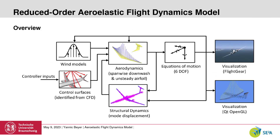The most important component of the model is the aerodynamics model, which is coupled with a structural dynamics model and the equations of motion. The aerodynamic model divides the wing into multiple strips; at each strip the unsteady aerodynamics are modeled with indicial functions from 2D airfoil theory. The spanwise downwash is applied by a lifting line method.